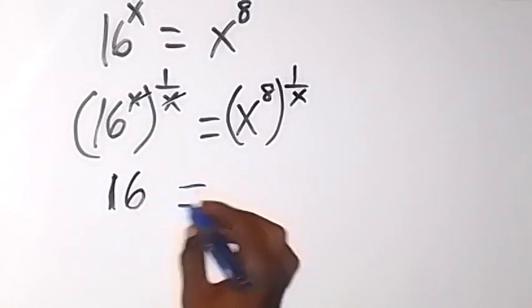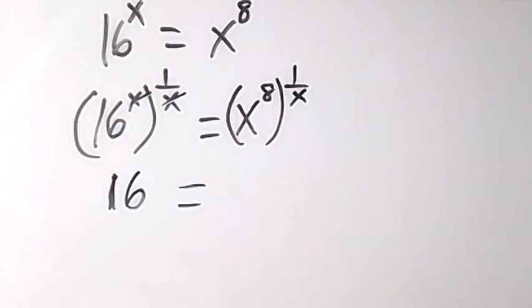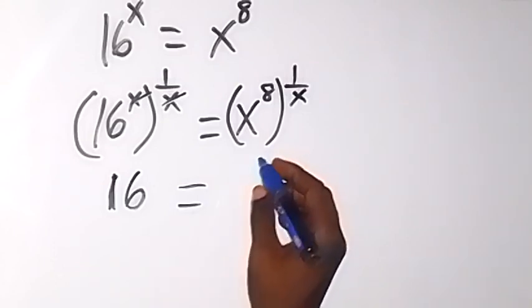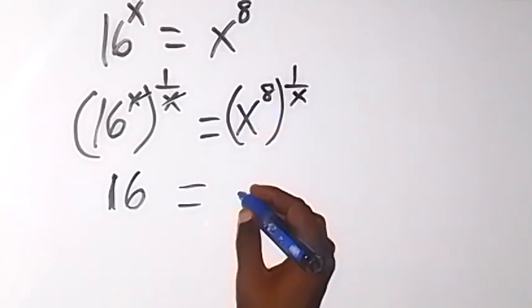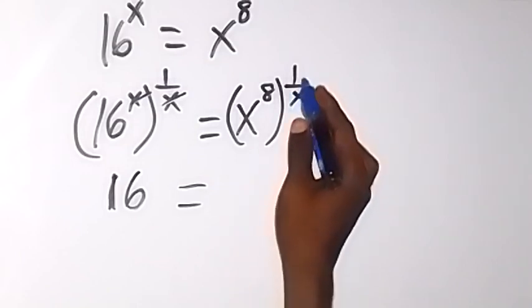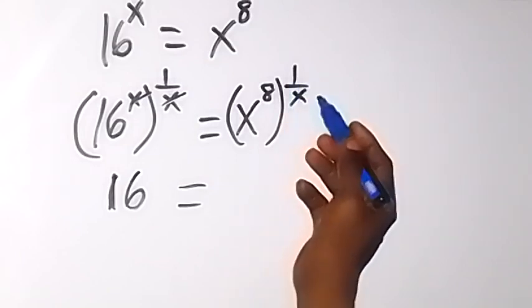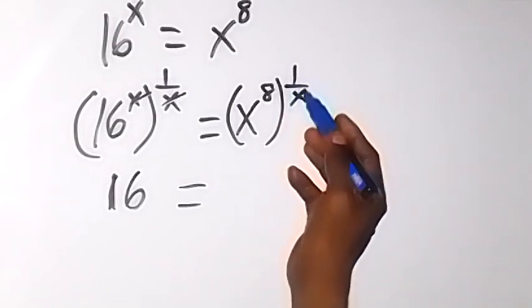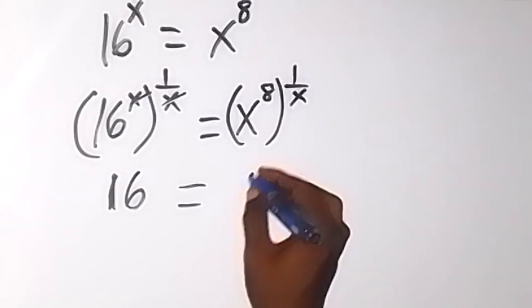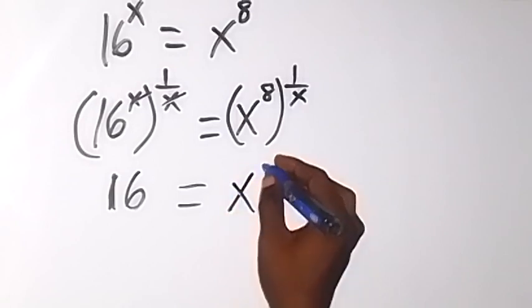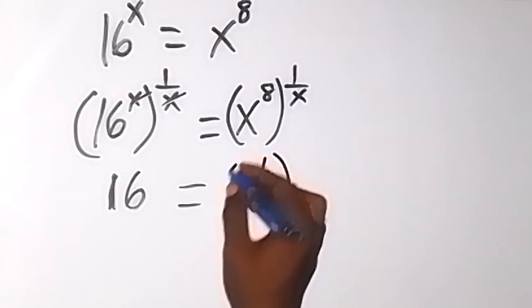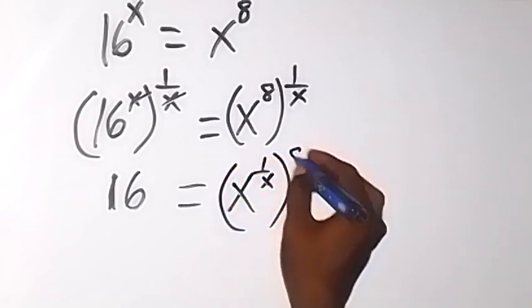Then it goes to here as well — they also multiply. And we can interchange the exponent. We can say this is x raised to power 1 over x, then raised to power 8.